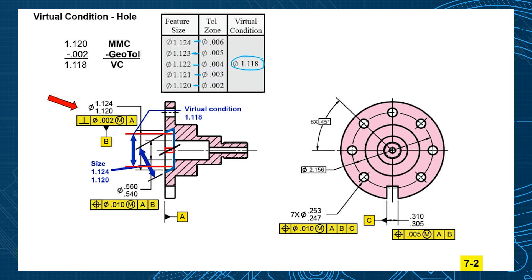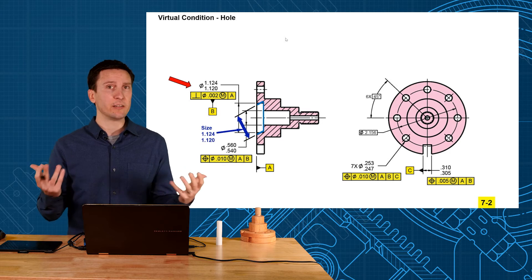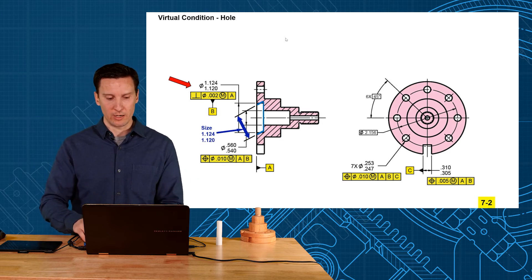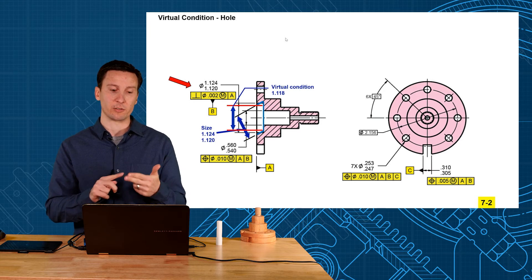So what is virtual condition? It's the single worst case boundary created by the collective effect of your size and your geometric tolerance. And we use this for calculating worst case mating parts to fit together. So in unit 2 we talked about size and that's going to be unrelated to anything else to itself only. Now we're introducing virtual condition the collective effect of size and your geometric tolerance.